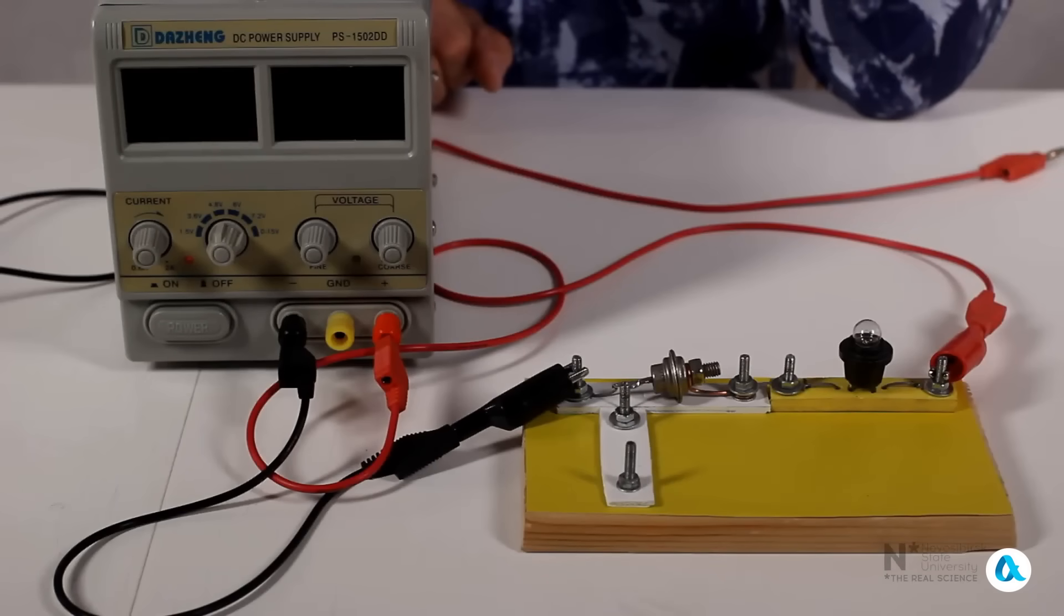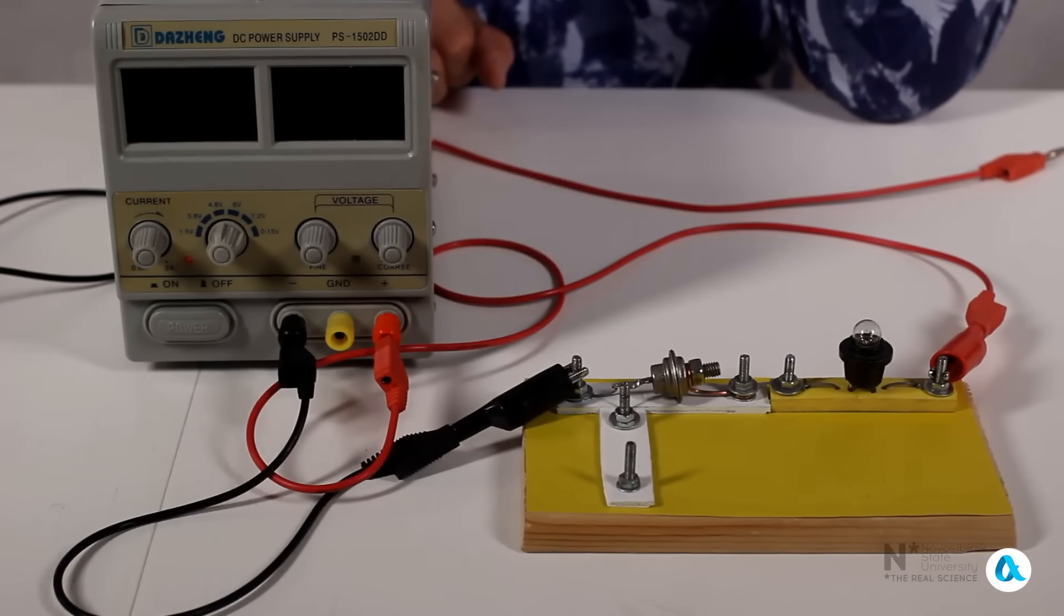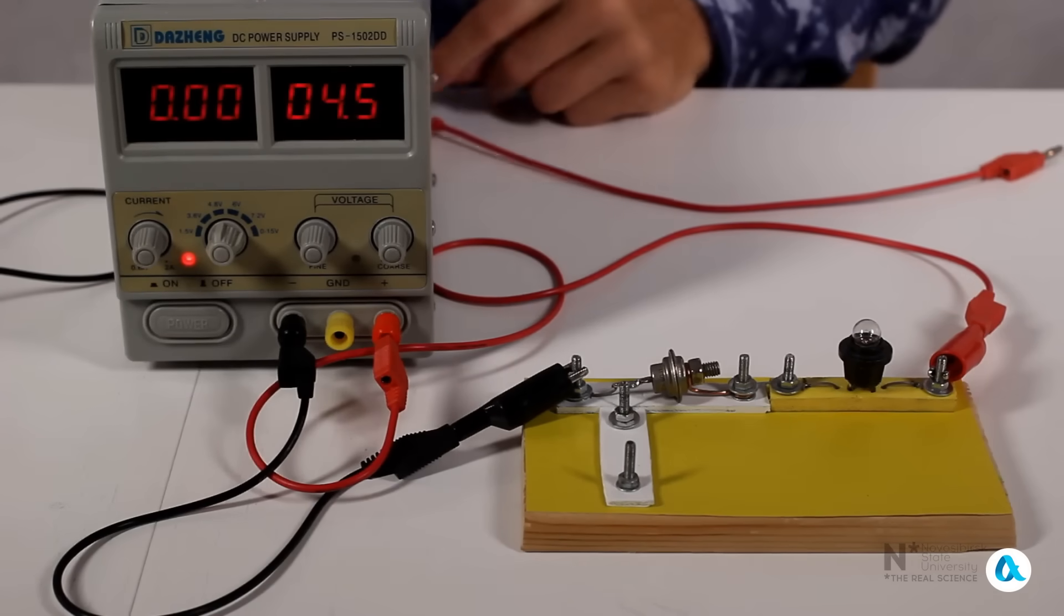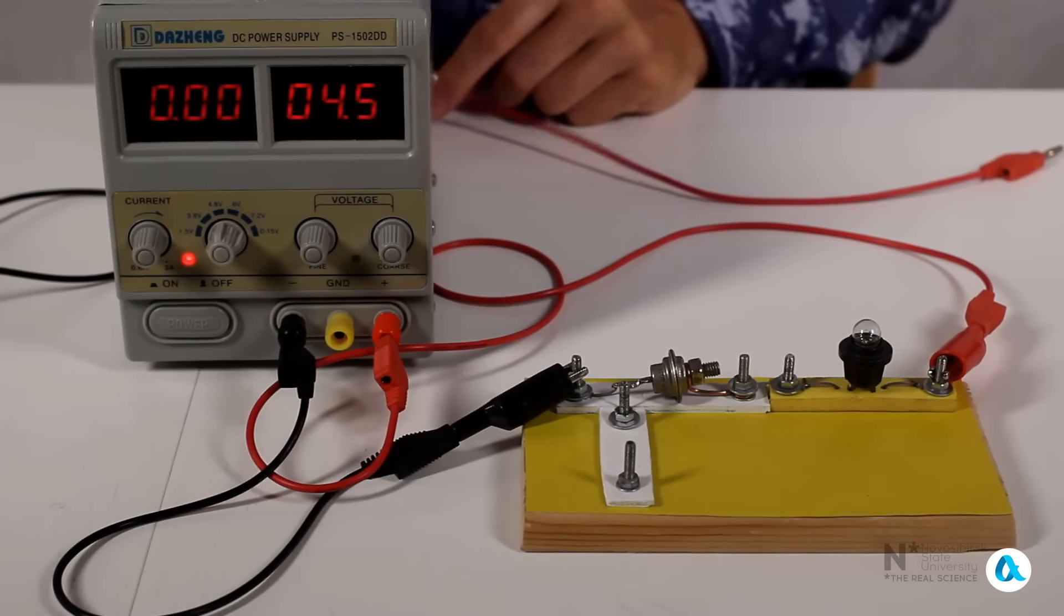Let's see how such a device works. Here, a light bulb is connected in series with the thyristor, and the positive terminal of the power source is connected through the bulb to the anode, and the negative terminal to the cathode, so the thyristor is connected in the forward direction. We apply voltage to this circuit, but the bulb does not light up. The thyristor remains closed, even though it is connected in the forward direction.